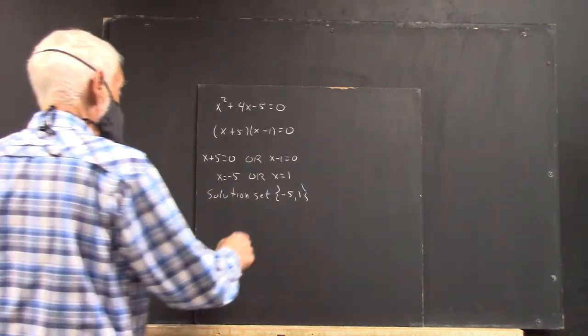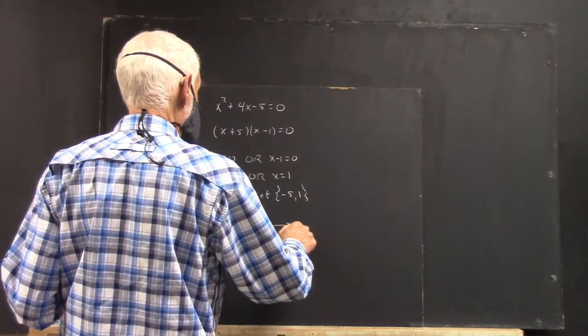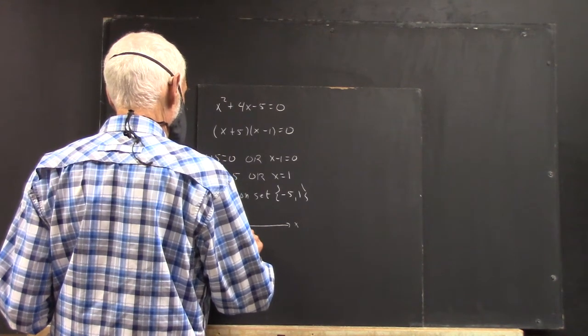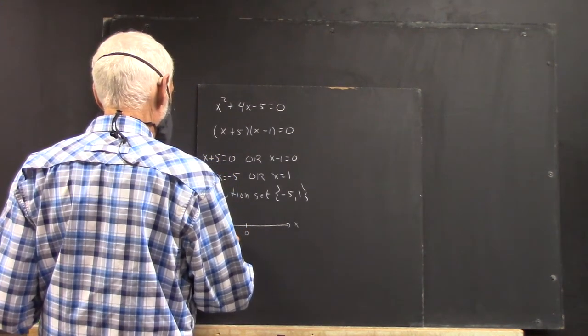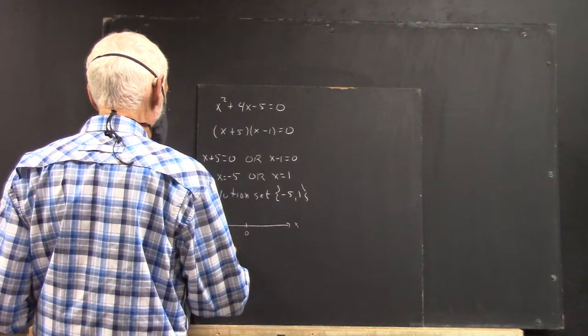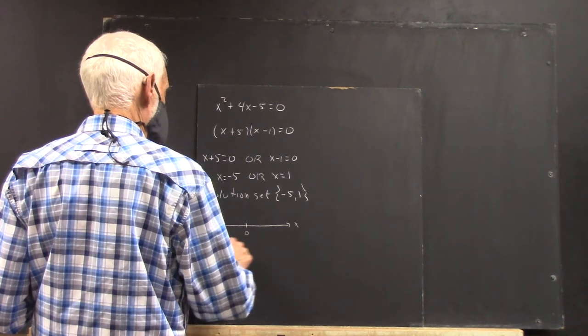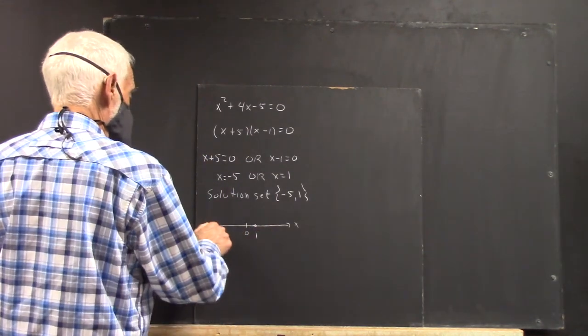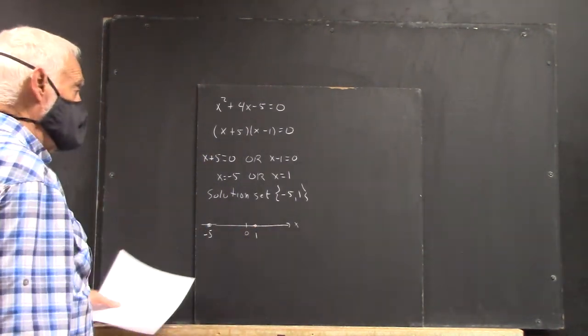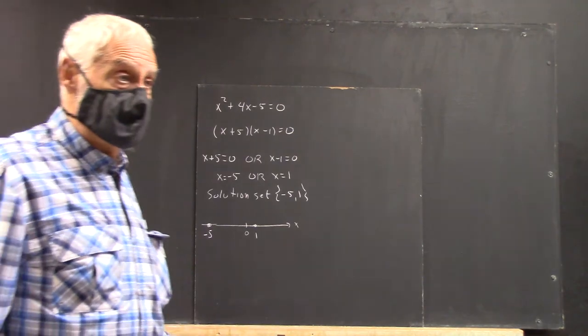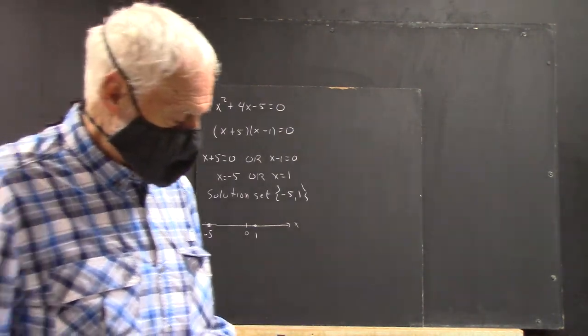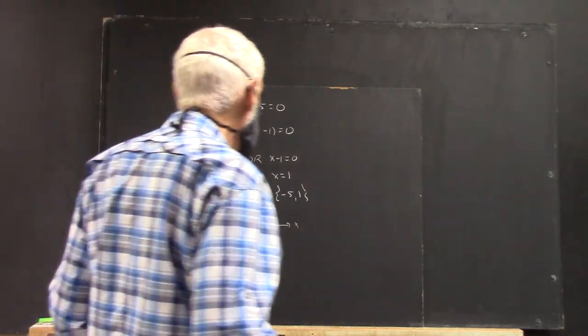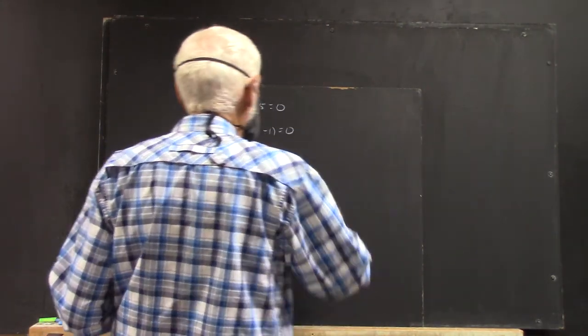And we could even graph that solution set on an x-axis. So, here's the axis, here's 0. And here's, let's say, over here is negative 5. Over here is 1. So, these two dots would represent your solution. Okay. Then we have this one.